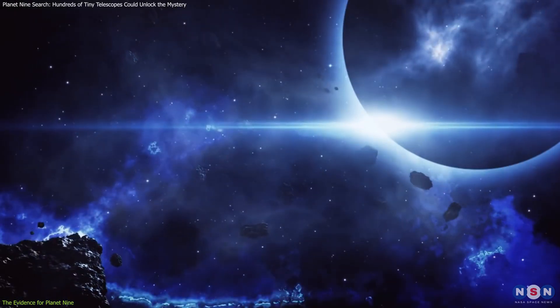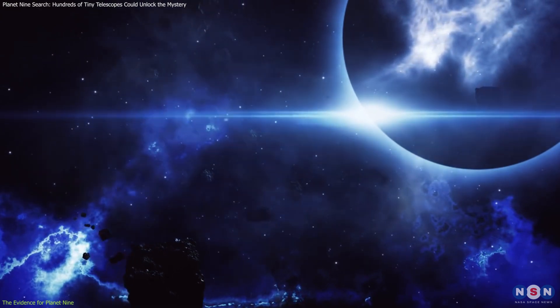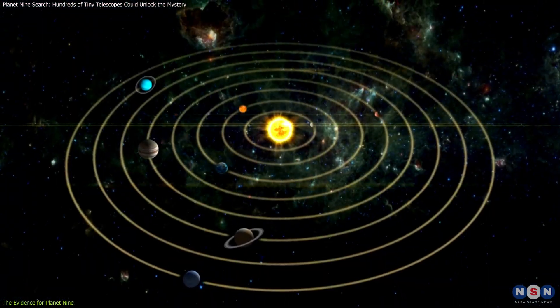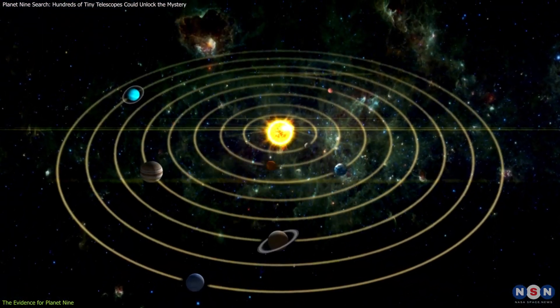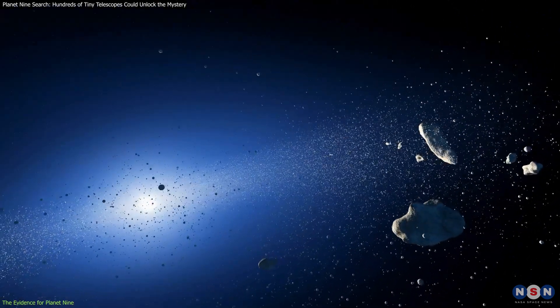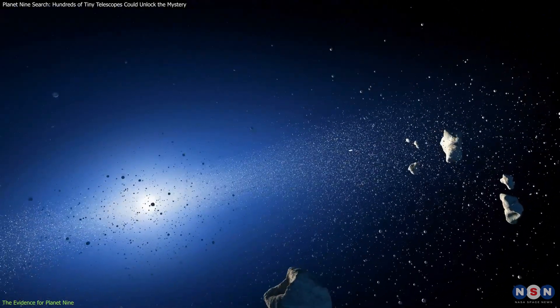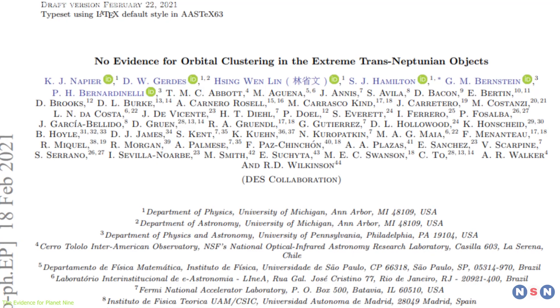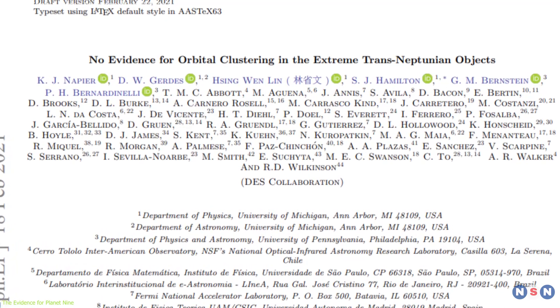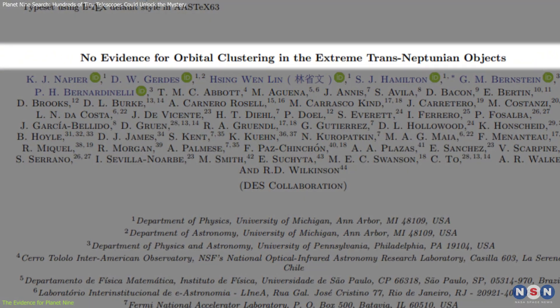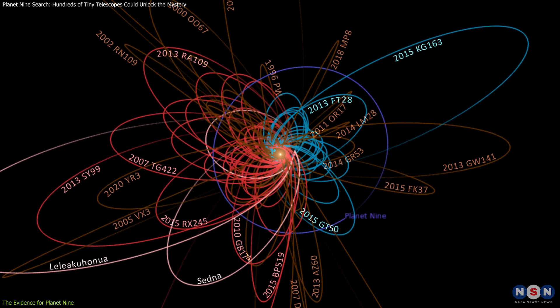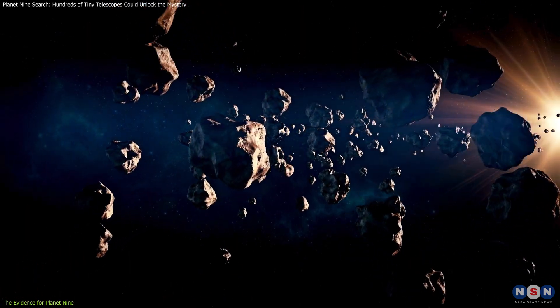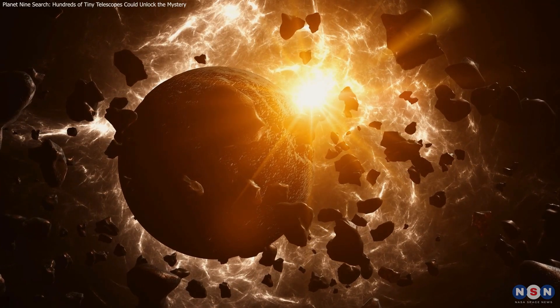This lack of detection has fueled skepticism among some astronomers. They argue that the clustering effect could result from observational biases, patterns arising simply because of the limited ways we observe the solar system, or from the combined influence of smaller yet undetected objects in the outer reaches. Adding to the debate, a 2021 study revisited the orbits of extreme TNOs and found no statistically significant evidence of clustering. The researchers concluded that the apparent patterns might be an artifact of the methods used to collect observational data rather than the influence of a massive hidden planet.